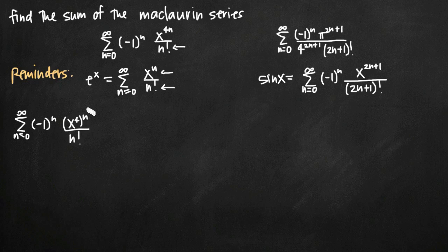This brings the n to the outside, and we can see that our x to the fourth here is similar to just the x value in the well-known series. We can separate these because when we raise x to the fourth to the n, we multiply the exponents together — that's just an algebraic operation with exponents — and we would get x to the four n. So that's why we can separate them.